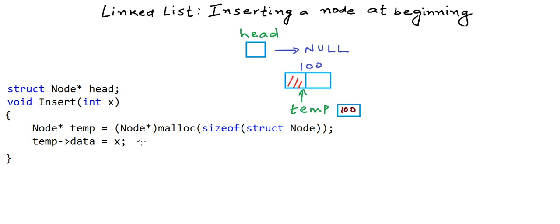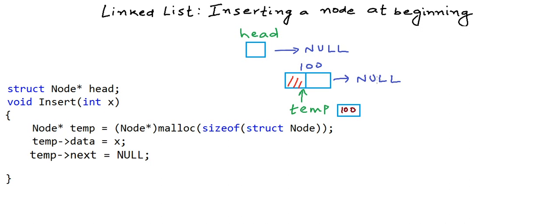We can set the link field initially to null and modify it if needed. So I'll write 'temp->next = null'. Remember, temp is a pointer variable and we are dereferencing it to modify the value at this particular node. Temp will also take some space in memory. The node has two parts: one for the pointer variable and one for the data. The link part is null — writing null or a null pointer means the same thing logically.